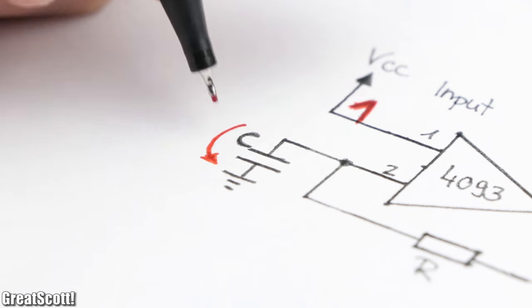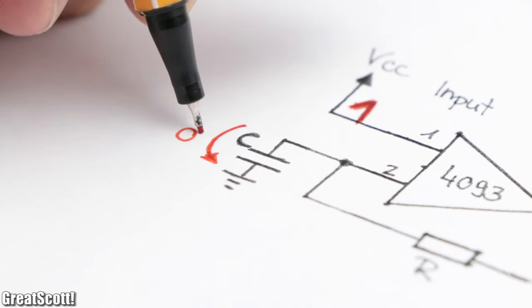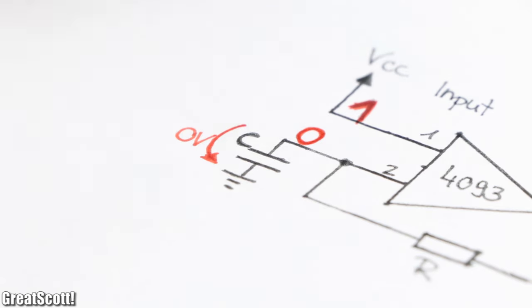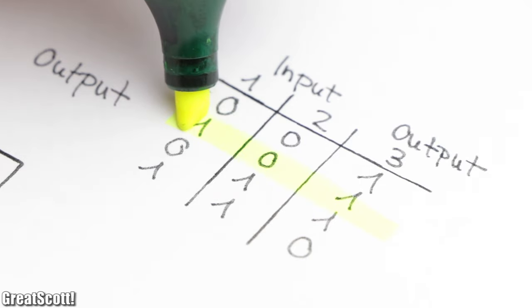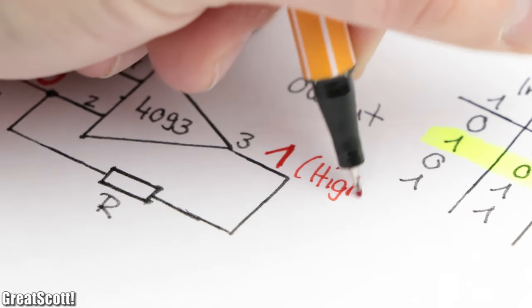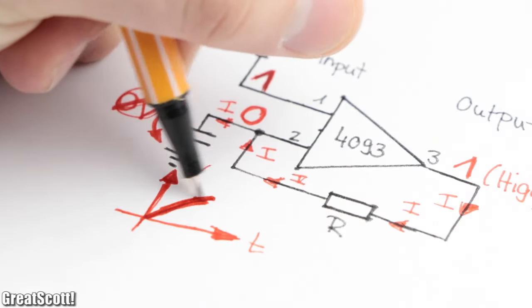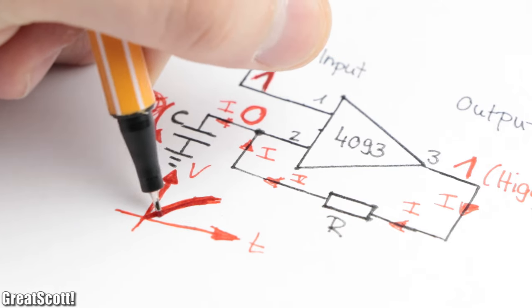That means according to the truth table, the output gets put high, which subsequently charges up the capacitor through the resistor. Once the capacitor reaches the high threshold value of 2.9 volts, the input is now a logical one, which means both inputs are one and thus the output is a zero, aka connected to ground, which therefore discharges the capacitor.